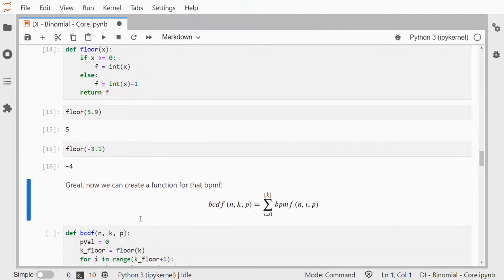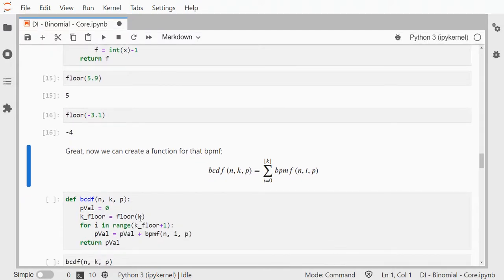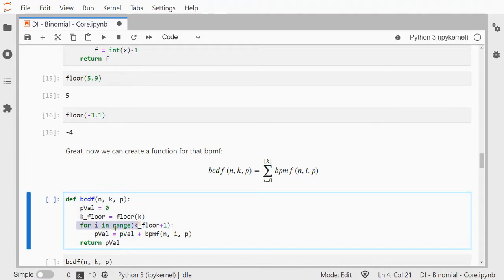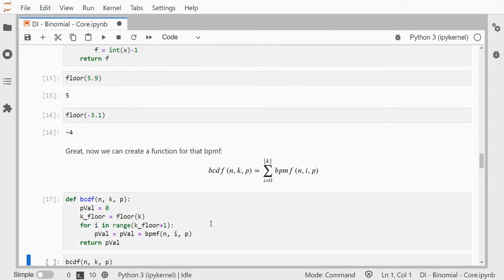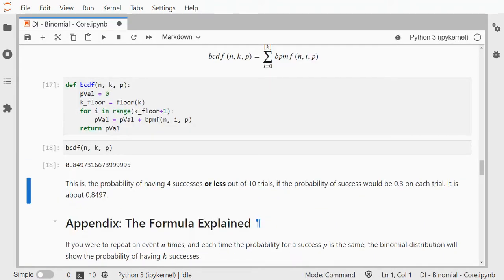All right, now that we have that function, we can actually fill out everything in here. This is just a sum, so we can use our for loop again. We're using our own floor function. We're using our own probability mass function. So yeah, no other libraries needed, and this should give us the cumulative density function, so 0.8497, and that's therefore the probability of having 4 successes or less out of 10 trials.